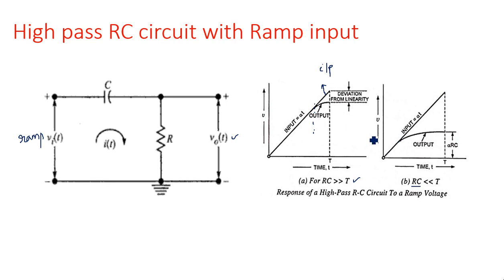This behavior is applicable only for the ramp signal. The first waveform with very small deviation occurs when RC is much greater than T. When RC is very small, there is maximum deviation because the output takes an exponential shape instead of following the linear ramp input y = mx + c.